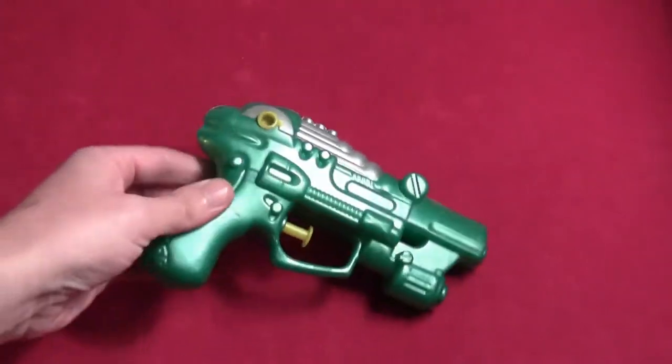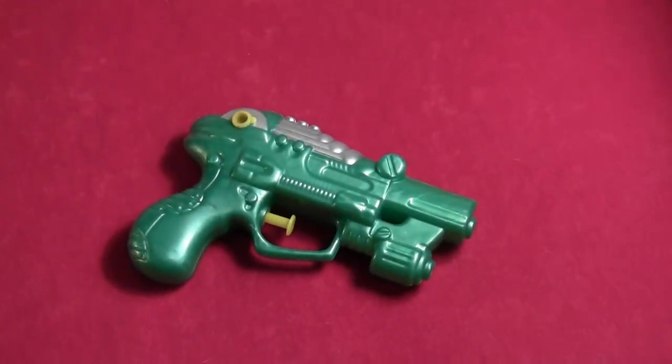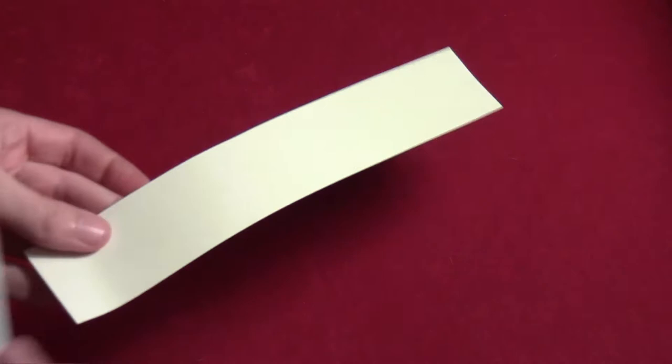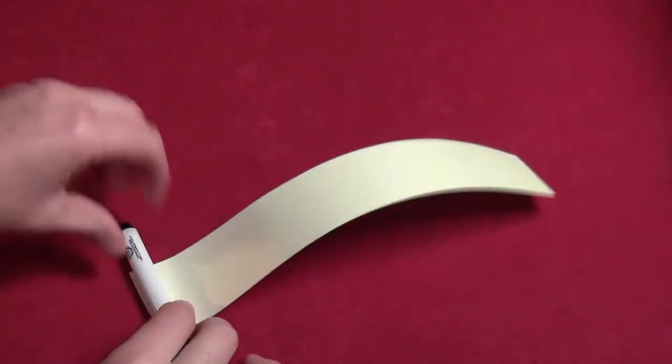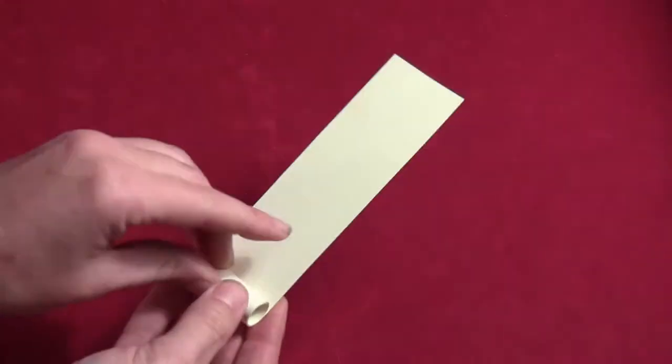So for the Grappling Gun, I got a little squirt gun for 75 cents from the Salvation Army. And you just want to take some cardstock and roll it up around a pencil or a marker to make yourself a little cardstock cylinder.